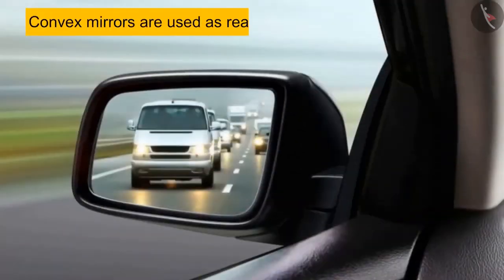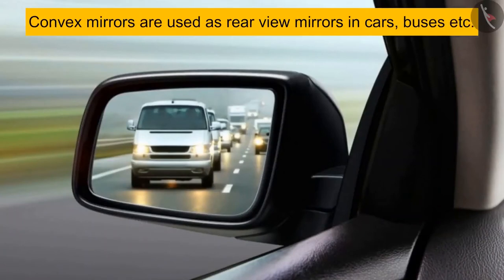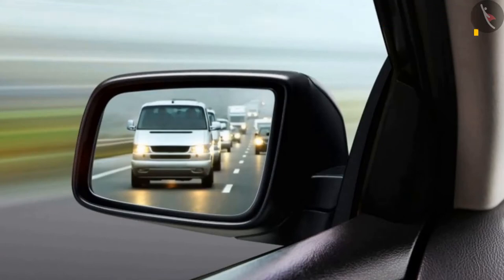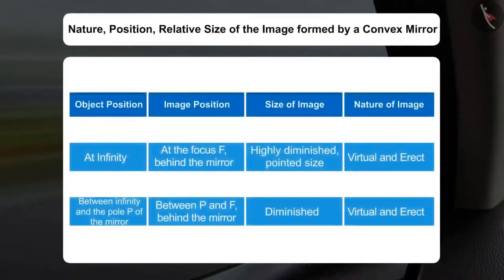Convex mirrors are used as rear-view mirrors in cars, buses, etc. as they form diminished and erect images. So through this video, we were able to know what reflection is and how the spherical mirror reflects. We have seen the reflection through a convex mirror. In the upcoming video, we will learn how reflection takes place in case of concave mirrors.